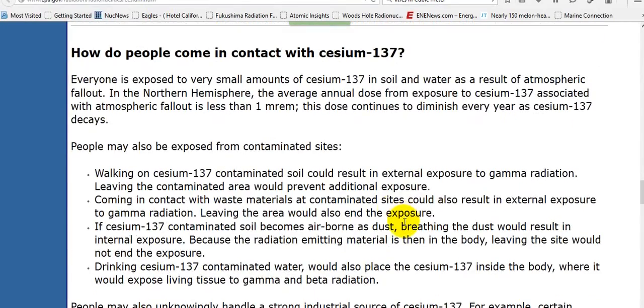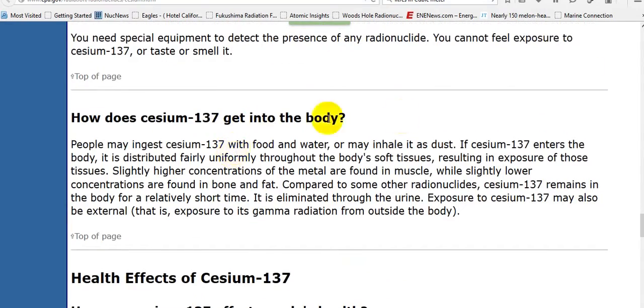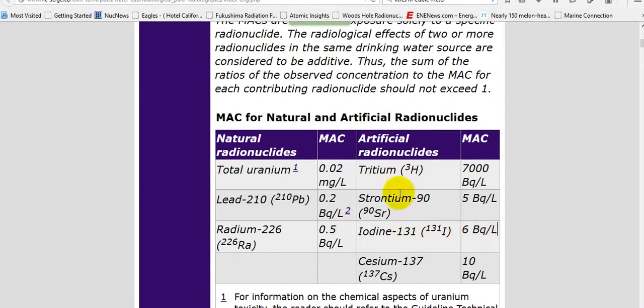How do people come in contact with cesium-137? Everyone is exposed to a very small amount of cesium in the soil and water as a result of atmospheric fallout, even though earlier they said that most of that is gone. People may be exposed from contaminated sites. It gets in the body with food and water. Water. It gets in your body with food and water.